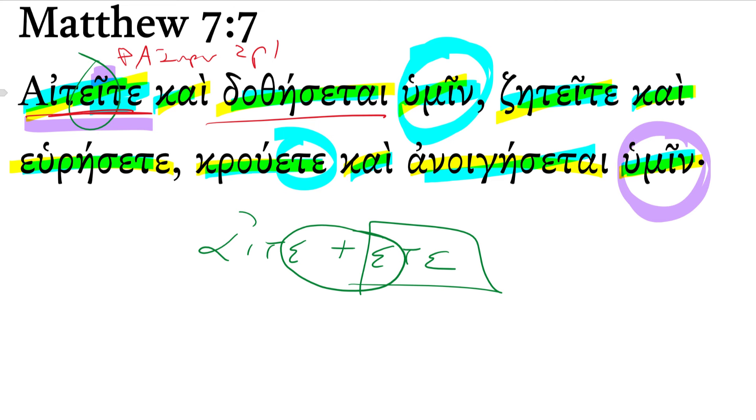And it will be given, that dothēsetai, you see the theta there, you know that's going to be passive. You see the do, you expect that to come from didōmi, you are correct. This is a future passive indicative, third person singular. It will be given.